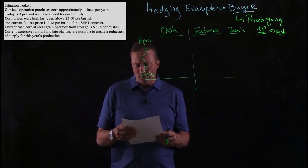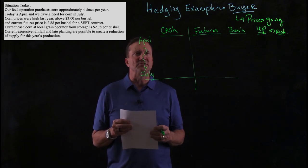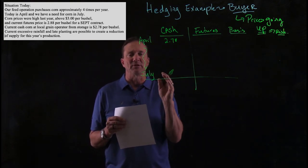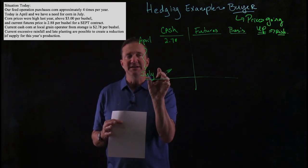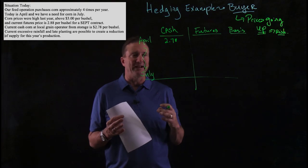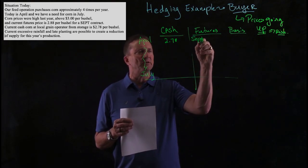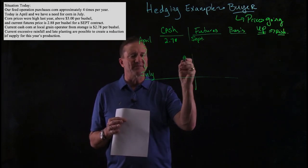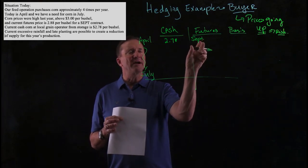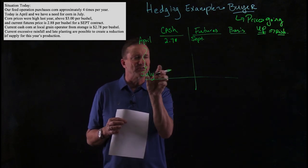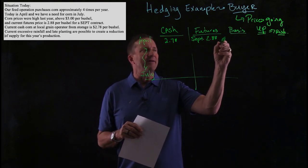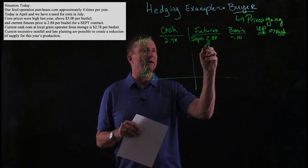We had information that cash at the local grain elevator where we could buy corn is $2.78 a bushel in April. Our problem is we don't need that corn until July, so we look at the local grain operator and say, well, that's what I could buy it for, but I'm not ready. Over in the futures market, we see a September contract trading at $2.88. We pick September because this contract month needs to be after our position in the market is finished — it will still be heavily traded in July. Cash minus futures equals basis, so that gives us a basis of negative $0.10.